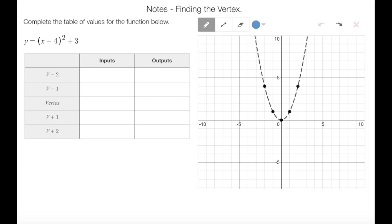The directions here say to complete the table of values for the function below, and our function here is y equals x minus 4 quantity squared plus 3.